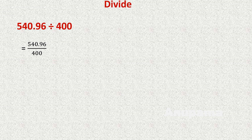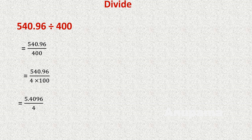One more question: 540.96 divided by 400. We write it as a fraction: 540.96 over 400, and rewrite 400 as 4 multiplied by 100. We place the decimal according to the denominator 100: the decimal shifts two places to the left, giving 5.4096 over 4.